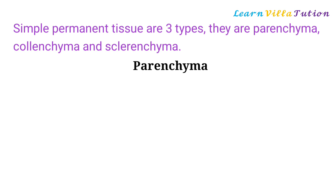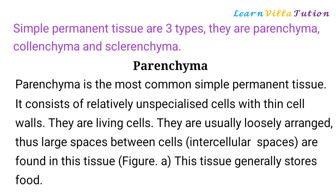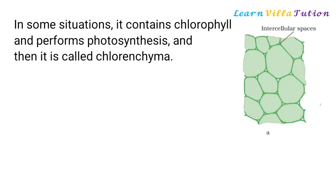Parenchyma is the most common simple permanent tissue. It consists of relatively unspecialized cells with thin cell walls. They are living cells, usually loosely arranged, with large intercellular spaces found in this tissue. This tissue generally stores food. In some situations, it contains chlorophyll and performs photosynthesis, and then it is called chlorenchyma.